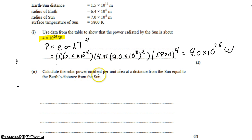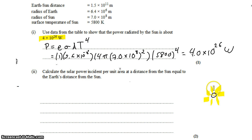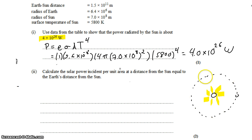Next, we want to calculate the solar power incident per unit area at a distance from the sun equal to the Earth's distance from the sun. Of the 4 times 10 to the 26 watts emitted by the sun, how many reach each square meter where the Earth is? We take that power and divide it by the number of square meters in the shell around the sun. The sun emits power in all directions, and the Earth exists on this shell made up of a certain number of square meters. All the power emitted by the sun passes through that shell.